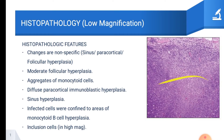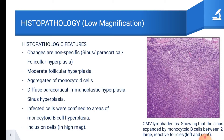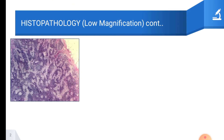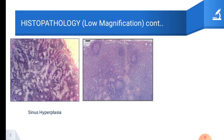This is an example of a CMV lymphadenitis slide. We can see in the slide that the sinus is expanded. This slide shows the presence of sinus hyperplasia in the lymph node — as you can see, the sinuses are far more numerous than normal. In this next slide, we can see the presence of paracortical hyperplasia. The follicle appears to have merged with the adjacent cell population, indicating that the paracortex has expanded — this is an example of paracortical hyperplasia.